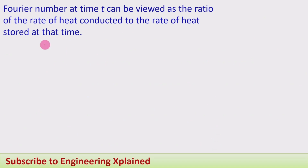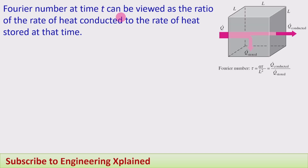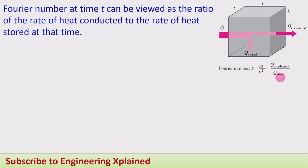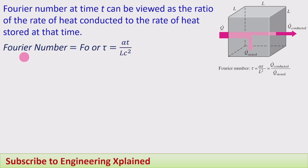Next is the Fourier number. The Fourier number at time t can be viewed as the ratio of the rate of heat conducted to the rate of heat stored at that time — that is, the conducted heat to the stored heat within the solid body. The Fourier number, denoted as F₀ or τ, is given by: τ = α·t / Lc².